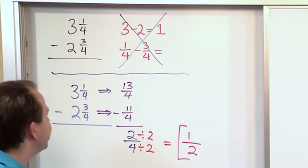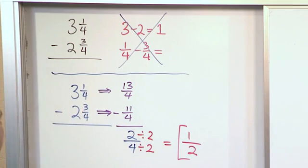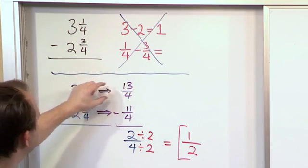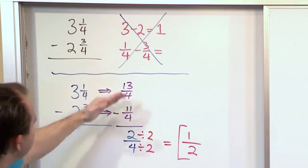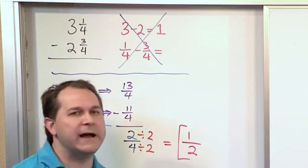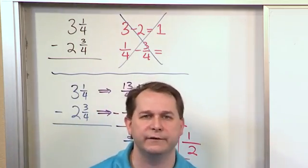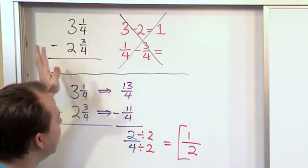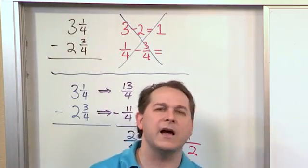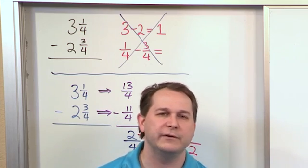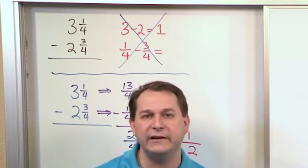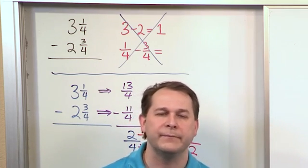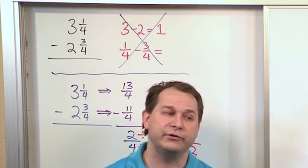Now, notice how simple that was and how bulletproof that was. We just change these to improper fractions, then subtract them and simplify. And you'll never run into any confusion. There is a way I could show you to handle doing it the other way, I could take time and show you that. But to be honest with you, it's not worth it because this is much easier when you're subtracting mixed numbers. So I'd like for you to get in the habit of when you subtract mixed...